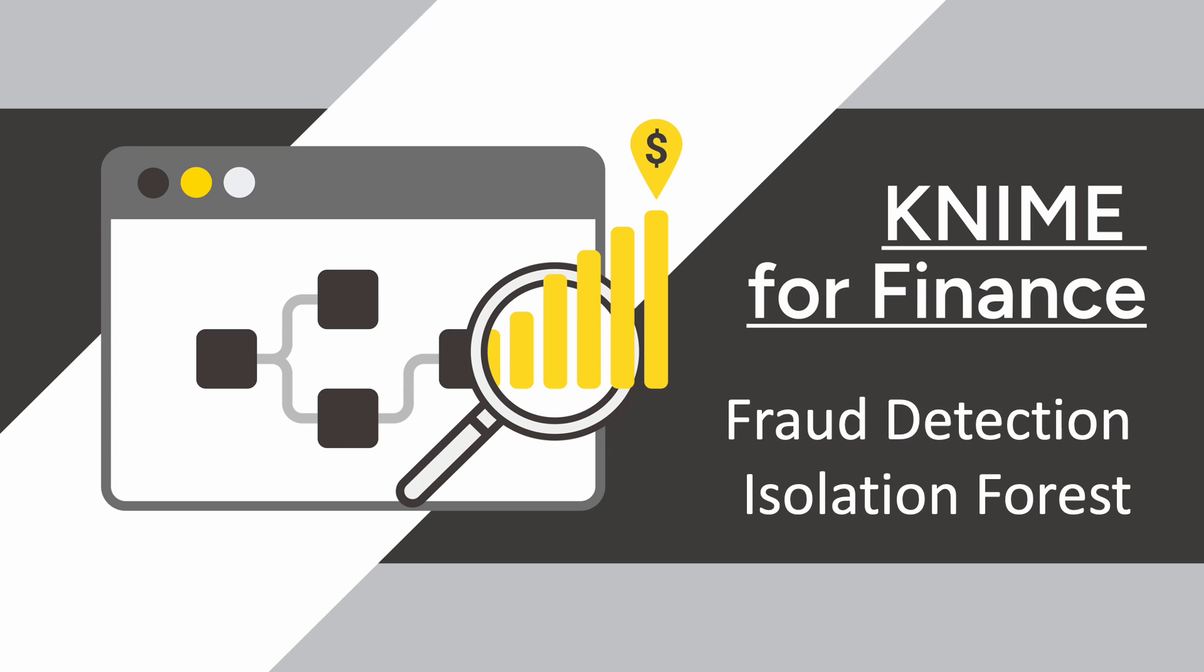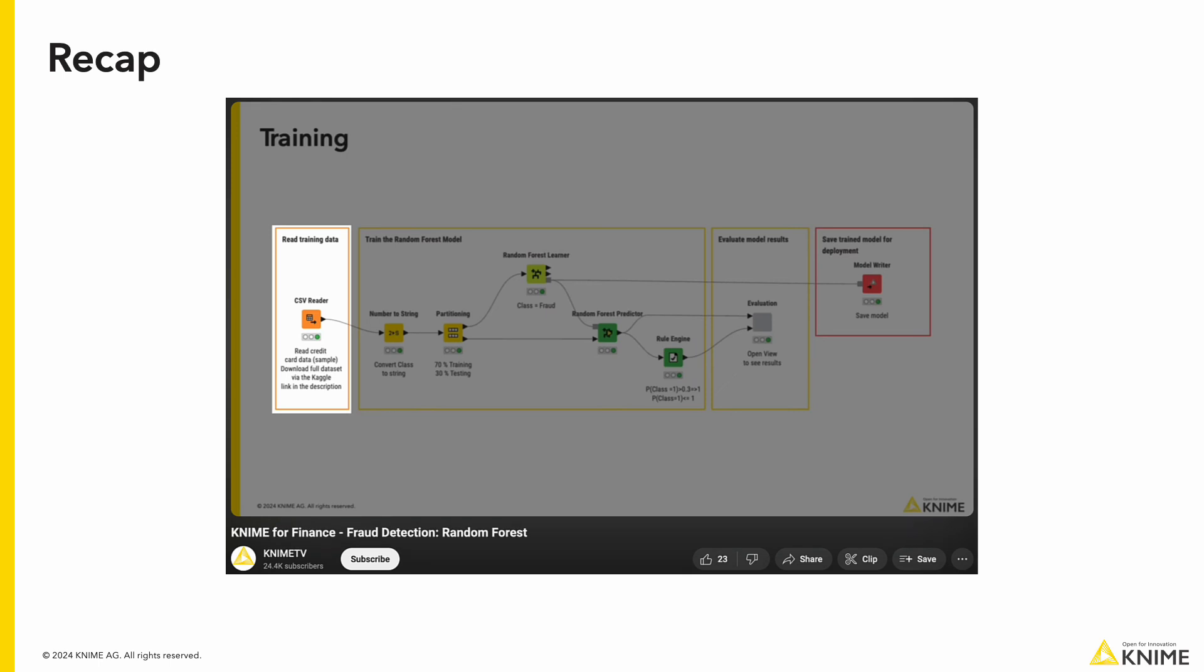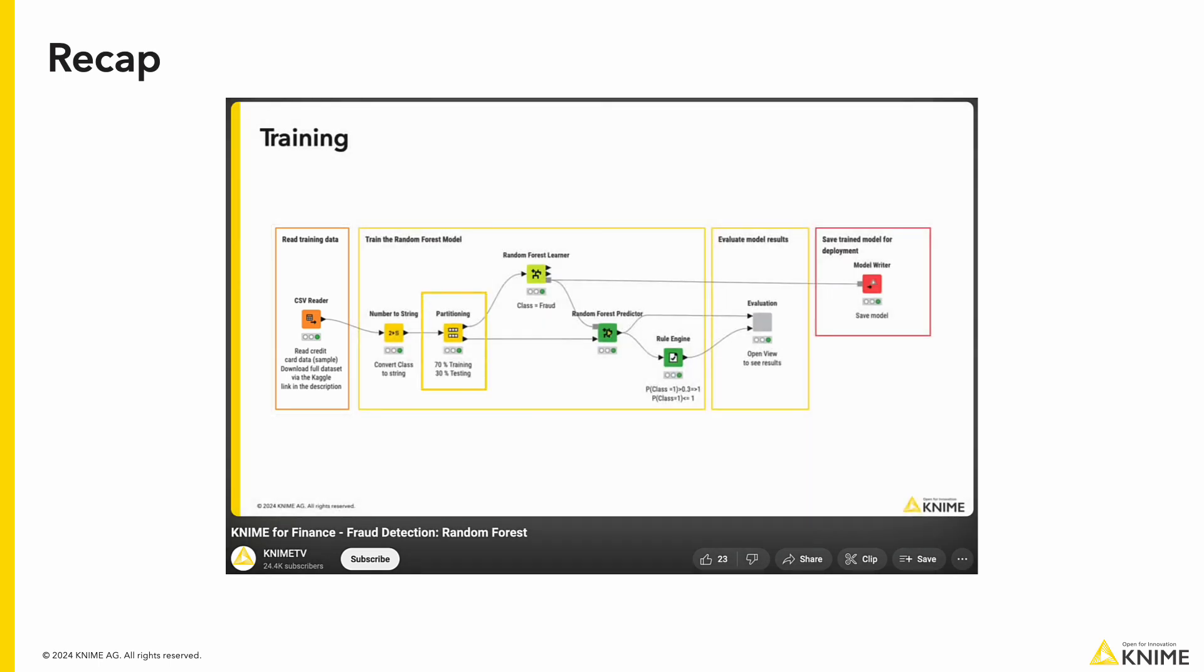Today, we will cover fraud detection using a particularly efficient algorithm called Isolation Forest. In our first video of our series, we used a supervised learning algorithm called Random Forest. Our new technique is similar to it, but the algorithm we will use today is unsupervised and works particularly well for finding outliers.